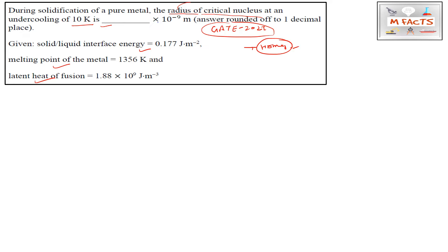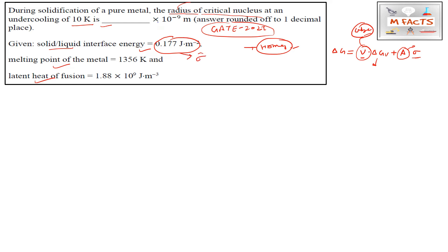Nucleation kinetics starts from the assumption that some volume changes between the parent phase and the product phase. The Gibbs free energy may be written as: ΔG = V·ΔGv + A·σ. Here V is the volume of the spherical phase — in some cases they may ask about cubic shape as well. ΔGv is the free energy change accompanying the formation of a spherical new-phase particle, and σ is the surface energy change per unit area. The solid-liquid interface energy is our σ value.